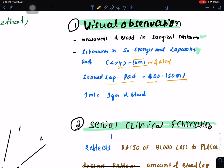One ml of blood is equal to one gram of blood. Directly you can measure in surgical container, or you can estimate approximately by looking into the surgical plates.